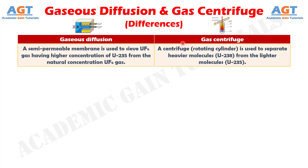Difference number 1. In the gaseous diffusion process, a semi-permeable membrane is used to sieve uranium hexafluoride gas having a higher concentration of uranium-235 from the natural concentration uranium hexafluoride gas. In the gas centrifuge process, a centrifuge, or rotating cylinder, is used to separate heavier molecules, uranium-238, from the lighter molecules, uranium-235.